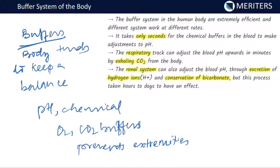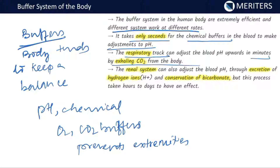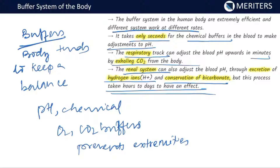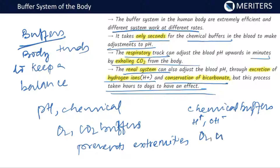The buffer system in the human body is extremely efficient and different systems work at different rates. Chemical buffers work very fast to adjust the pH. Respiratory buffers take a few minutes to adjust your oxygen-carbon dioxide balance. Renal buffers can adjust blood pH through excretion of hydrogen ions and conservation of bicarbonates, and this process can take hours to days. Basically, you have to manage your chemical buffers, your acid-base balance, and your oxygen-carbon dioxide buffers.